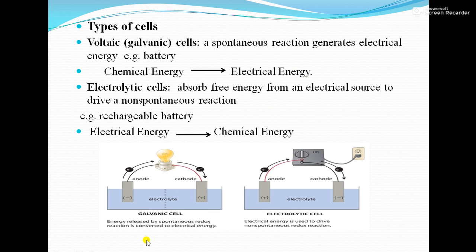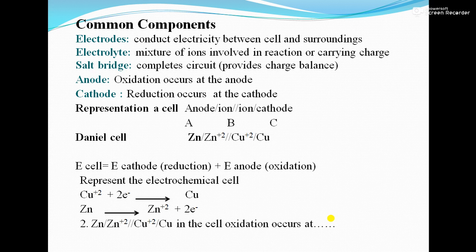You can see in the diagram: first is the galvanic cell and second is the electrolytic cell. Next are the common components in the cell. First are electrodes, which conduct electricity between the cell and the surroundings. There are two types: anode, where oxidation takes place, and cathode, where reduction occurs. Second is the electrolyte — a mixture of ions involved in the reaction or carrying charge. Third is the salt bridge, which completes the circuit and provides charge balance.